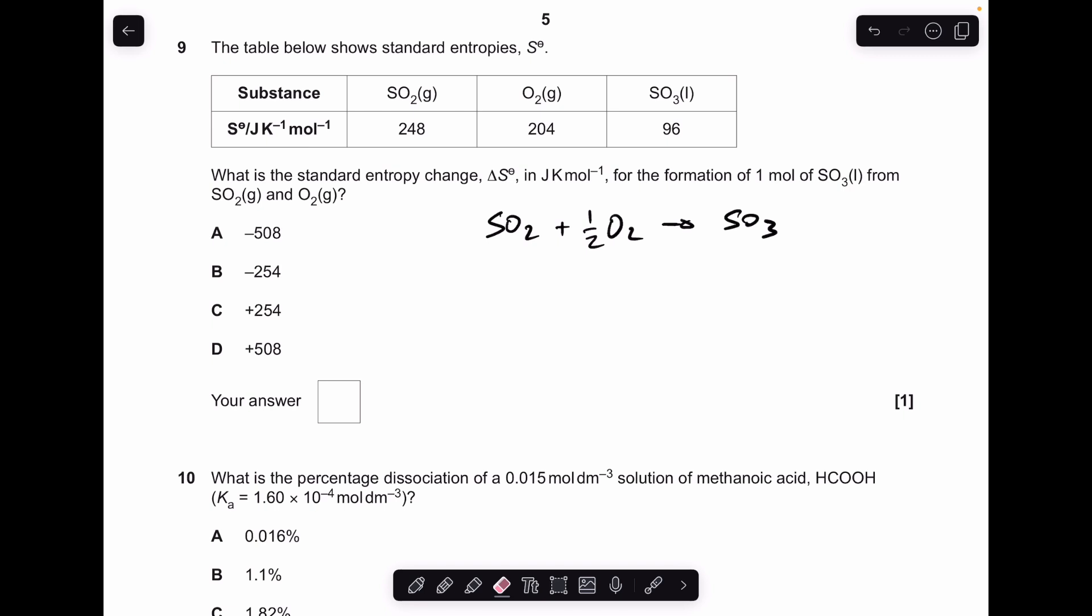Moving on to number 9. So we've got to calculate the entropy change for the reaction I've written up there. First thing we can do is rule out C and D. They've both got positive signs, so they would involve an increase in entropy. This is a decrease because you're going from 1.5 moles of gas down to 1. So for the calculation, we take the entropy of the product, SO3, and subtract from that the entropy of the reactants. So when you put that in your calculator, you get minus 254, so the answer is B.